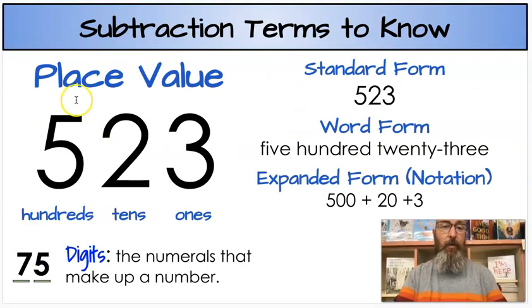Next, and I go over this every time, we have our place value. When we have numbers each number is in a place. So we have the number 523 here. There's 3 in the ones place, 2 in the tens place, 5 in the hundreds place. Each of those numbers or numerals are called digits. That would be a three digit number. 75 down here, two digit number.